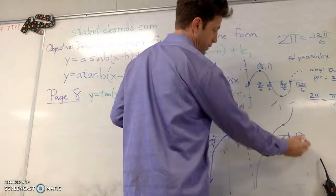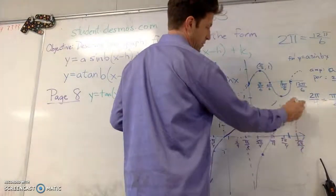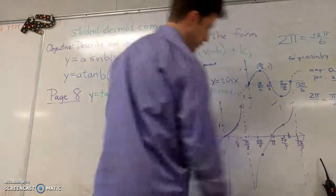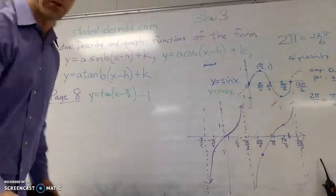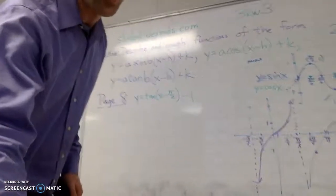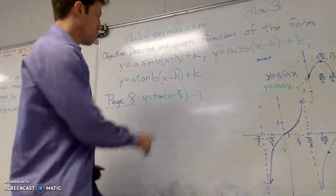5 pi over 4, you've got the positive 1. And then, 3 pi over 2, or 6 pi over 4, you've got the next asymptote. So it repeats. That's the tan function.